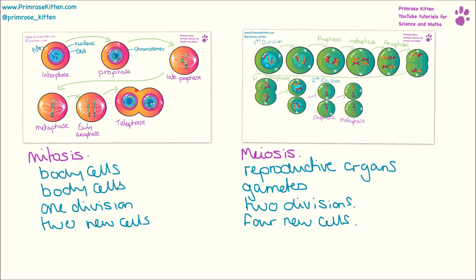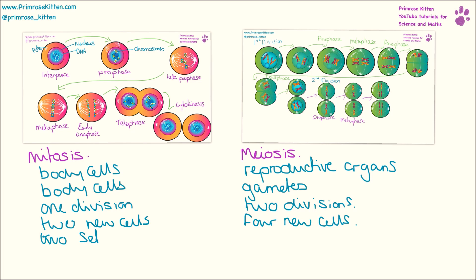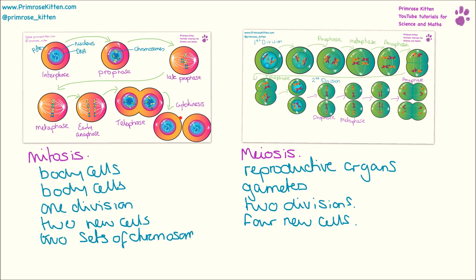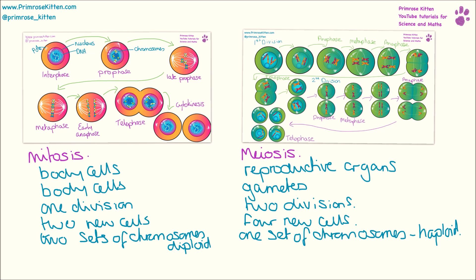In mitosis, the daughter cells have two sets of chromosomes — they are diploid. In meiosis, the cells are haploid. In mitosis, the daughter cells are identical to the parent cell, whereas in meiosis they are not identical.